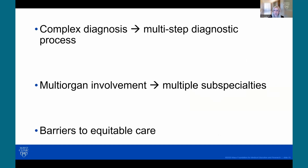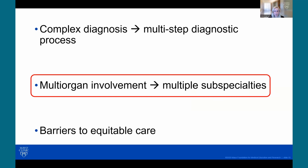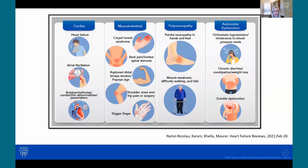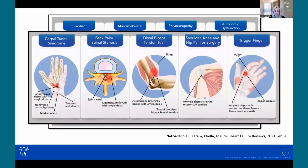Multi-organ involvement is definitely a huge challenge because multiple subspecialties are involved. This is a figure from one of Dr. Nativi's recent review articles that highlights the different organ involvement: cardiac, musculoskeletal, neuropathy, autonomic dysfunction. Even just focusing on musculoskeletal complaints — you can see carpal tunnel, back pain from lumbar stenosis, biceps tendon rupture, shoulder, knee, hip pain, and trigger finger. You can see how closely we work with our orthopedic colleagues.